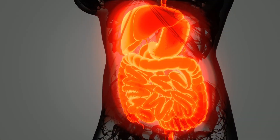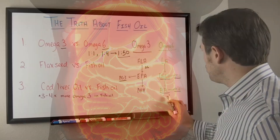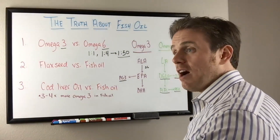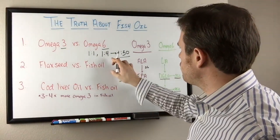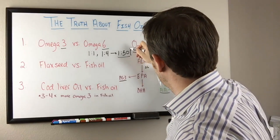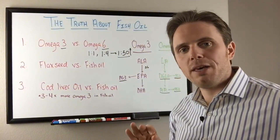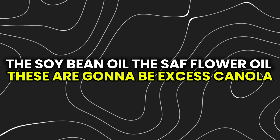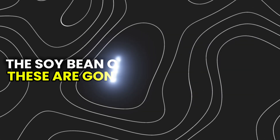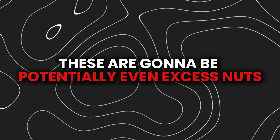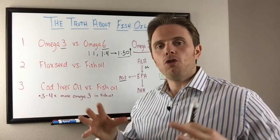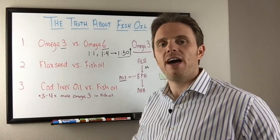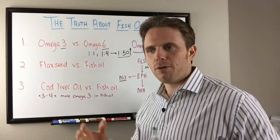Arachidonic acid is important, so it's not about avoiding it — that would mean avoiding meat and other healthy foods. It's about avoiding foods that drive the ratio up high. The foods that drive that ratio very high are refined vegetable oils: cottonseed oil, soybean oil, safflower oil, excess canola, and potentially even excess nuts. These can drive this ratio up super high. The reason it's happened is that the processed food industry has relied on lots of these cheap omega-6 fatty acids in junk food.